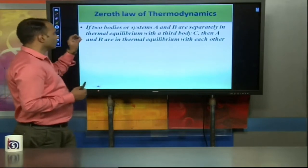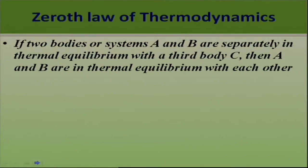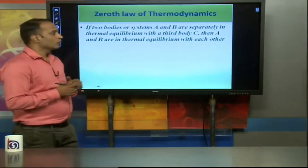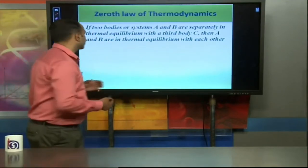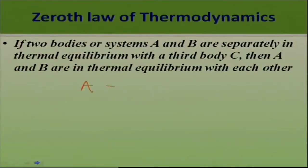If two bodies or systems A and B are separately in thermal equilibrium with a third body C, then A and B are in thermal equilibrium with each other. If we have three systems A, B, C, and A is in thermal equilibrium with B, then temperature of A equals temperature of B, and temperature of B equals temperature of C.